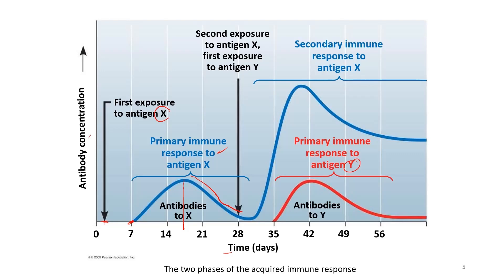When the body is reinfected by the same pathogen — in this case, antigen X — the immune system triggers a secondary immune response. This is different from the primary response due to the presence of memory B cells and memory T cells. Following the first infection, the immune system produced not only effector cells but also memory cells. Memory B cells carry a copy of the antibody specific to antigen X. The secondary immune response is much more rapid, and the antibody concentration produced is higher compared to that of the primary immune response.